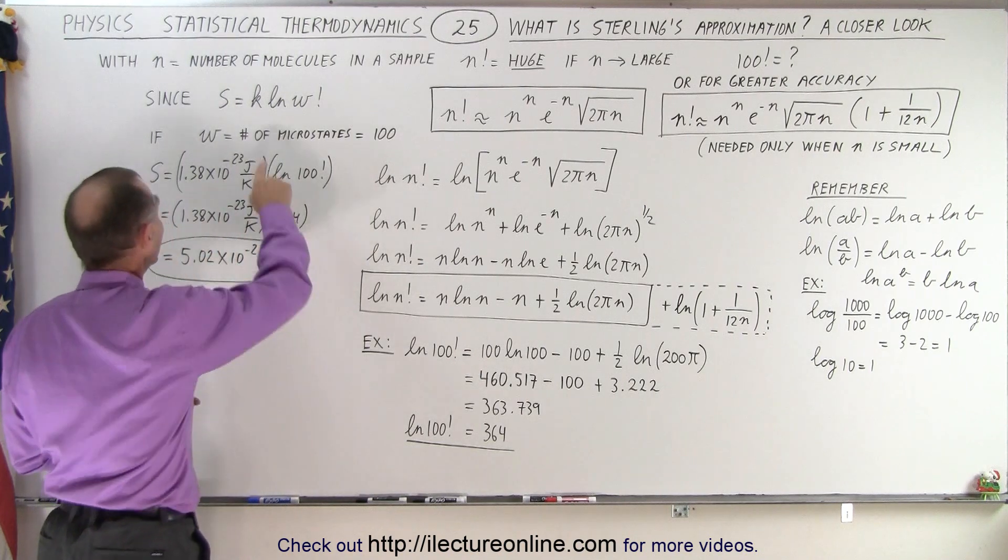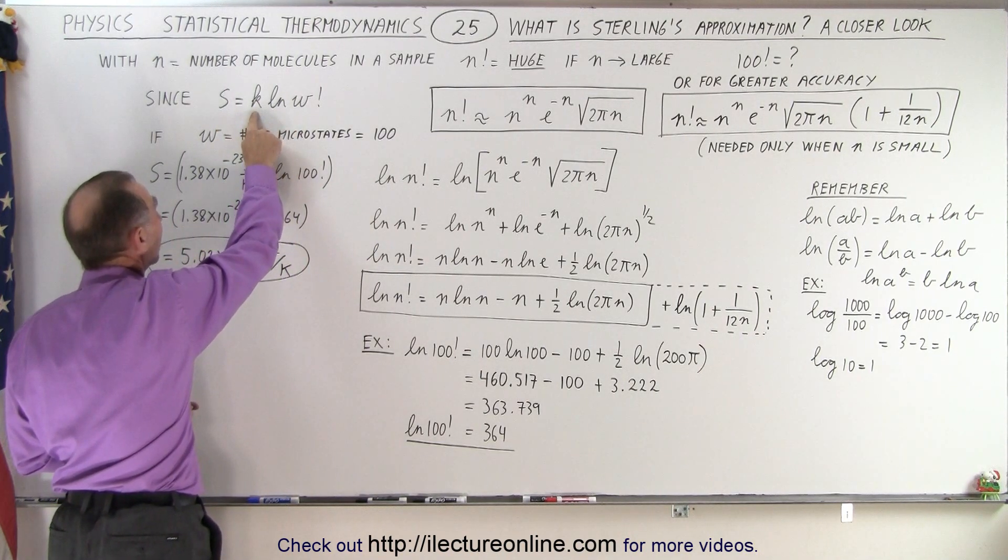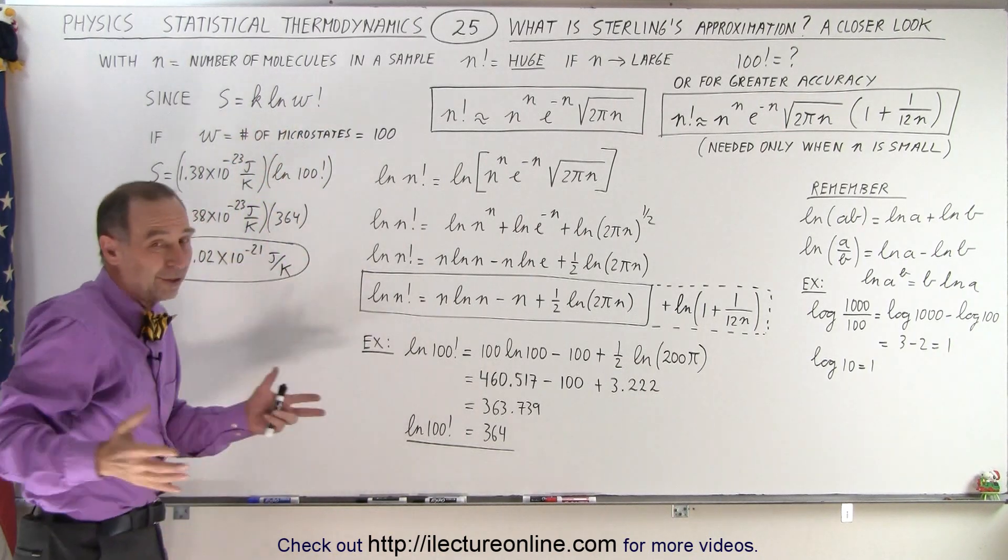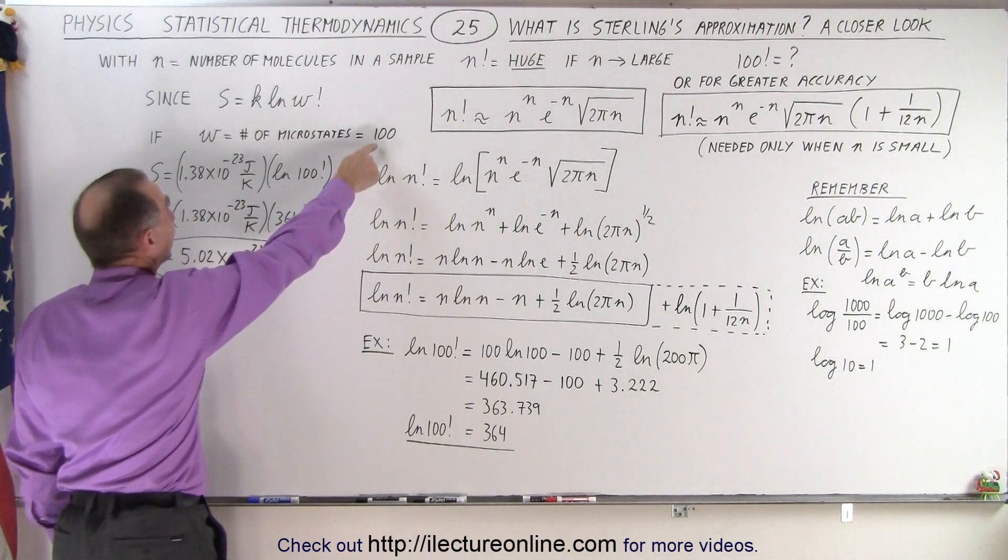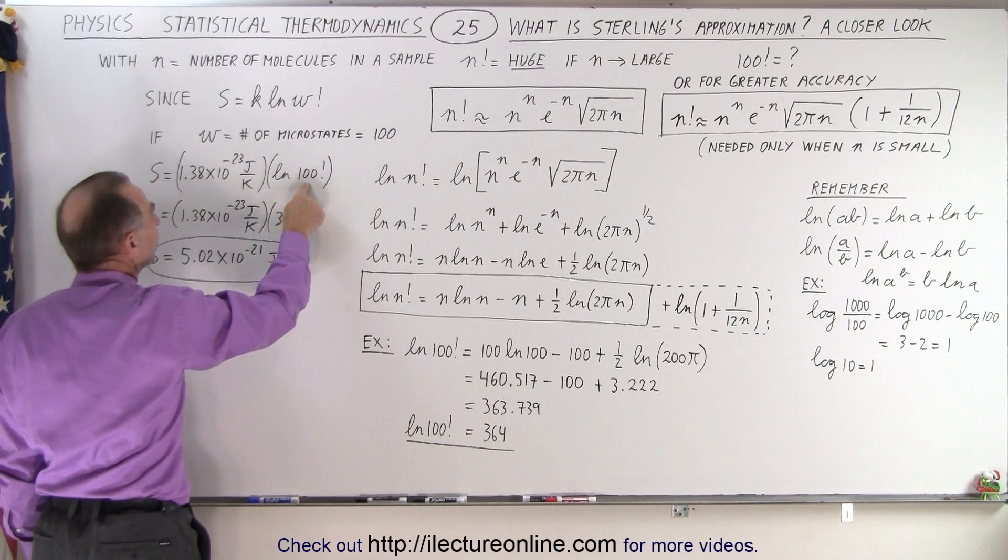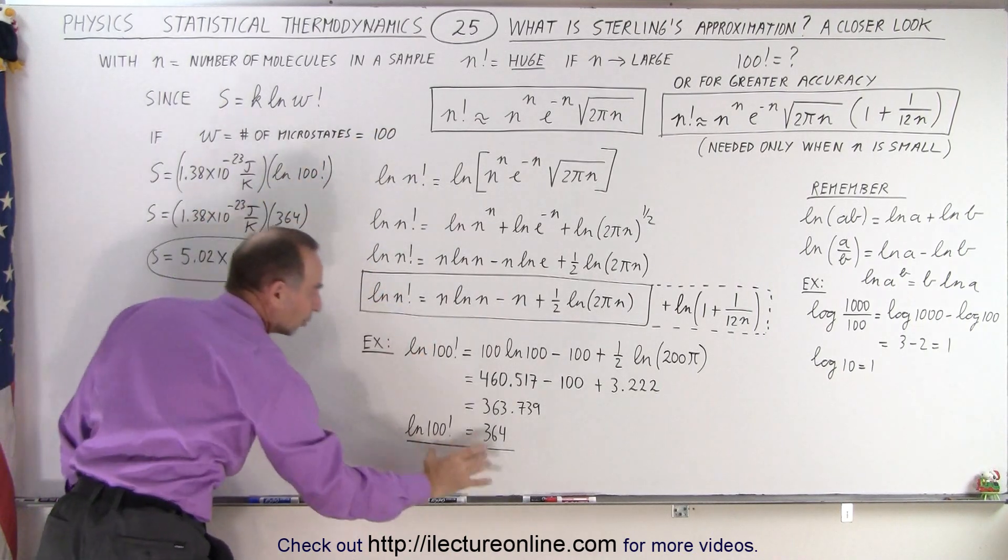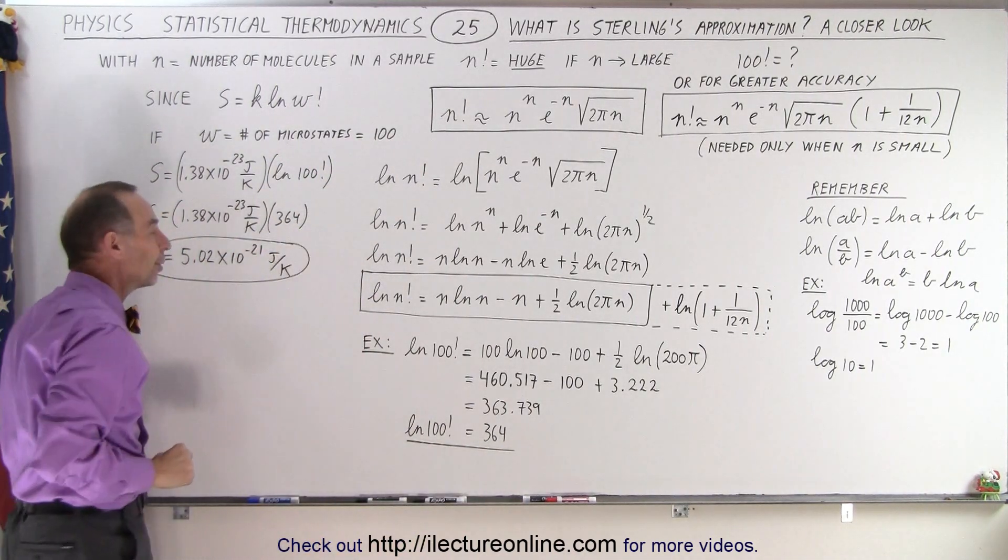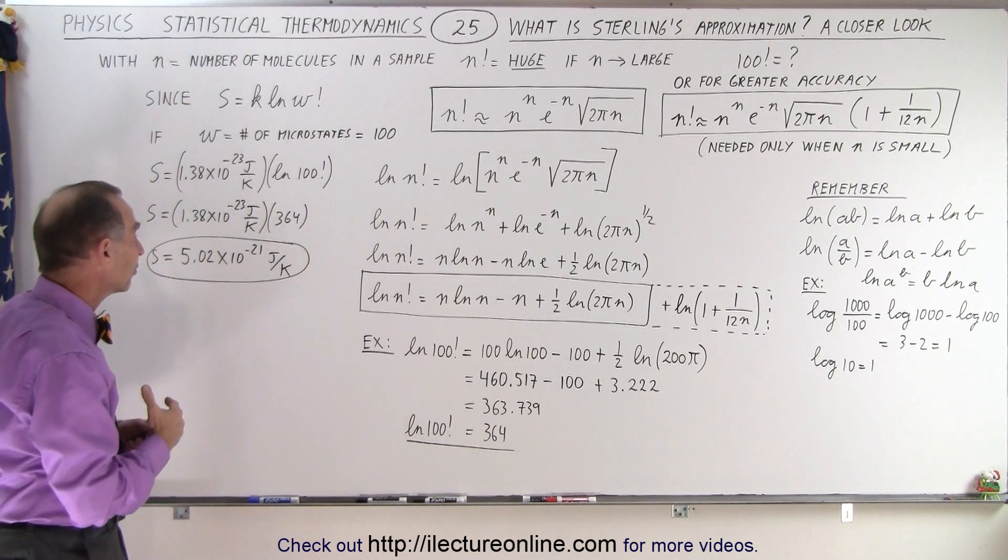Now let's say we have the equation here where the entropy is equal to Boltzmann's constant times the natural log of w factorial. w of course represented the number of microstates, and if we have 100 microstates then this becomes Boltzmann's constant times the natural log of 100 factorial. Now we know with Stirling's approximation this is equal to about 364, and so when we multiply we get this number for the entropy in the case where there's 100 microstates.